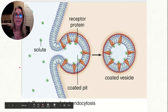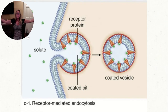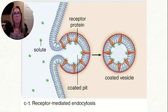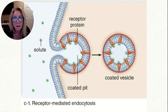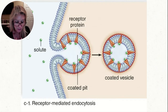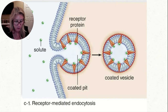Receptor-mediated endocytosis is a form of pinocytosis. Things attach onto receptors on the cell membrane, and when the receptors are full, it folds in and performs endocytosis. This is called a coated pit because it's coated with whatever is binding to it. Receptor-mediated endocytosis is a specific macromolecule binding to receptors — it's selective and more efficient than pinocytosis. It's used to move substances like from maternal to fetal blood.